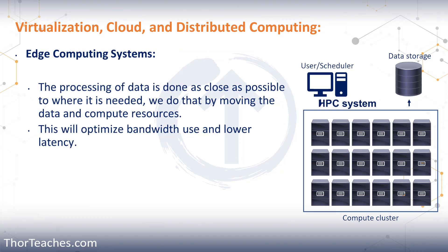Then finally, we talked about edge computing. Here we bring the data as close as possible to wherever that data is needed by moving the data and the compute resources, and this lowers both the bandwidth used and the latency. With edge computing, the most commonly used type are CDNs. All CDNs are edge computing and distributed computing, but not all distributed or edge computing is CDNs. And I think close to 80% of large enterprises have already implemented, or are in the process of implementing, edge computing in their organizations.